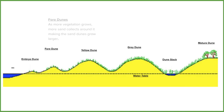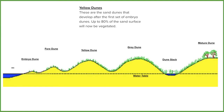Now we come to the yellow dunes. At this point we're going to start to see more of the surface of the sand dune covered by vegetation — it can be up to 80% of the sand dune now covered by some form of plant life. You can see it's still growing taller, as it's still being supplied with sand carried by that prevailing wind inland.